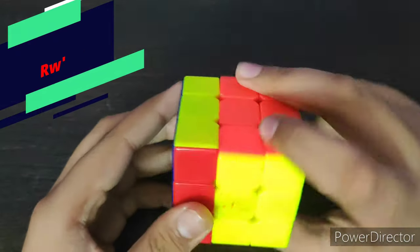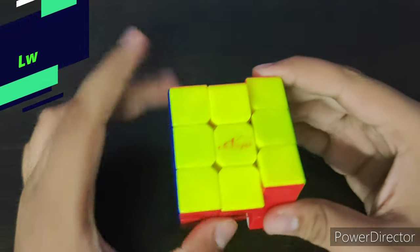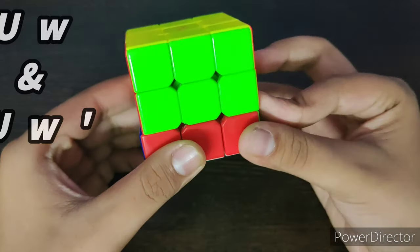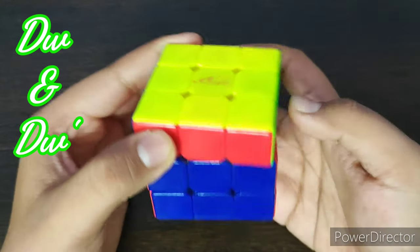So R wide means this turn. Now R wide prime means this side. L wide means this side, and L wide prime means this side. Now U wide means this side, and U wide prime means this side.